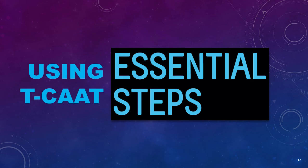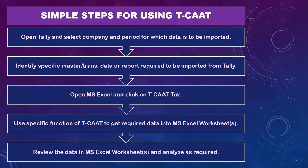How to use TCAT? Let's look at the essential steps. First, open Tally and select the company and the period for which you want the data to be imported. Second, identify the specific masters, transactions data, or reports required to be imported in Tally. Third, open MS Excel, click on the TCAT tab, and use the specific function to get the required data into MS Excel worksheets. Then review the data and perform analysis as required.